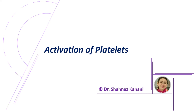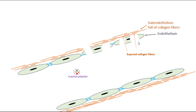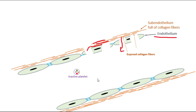It is important to know some methods by which platelets become active. For example, here we have a blood vessel whose wall is damaged. Part of the wall is endothelium, and in spots where endothelial cells are damaged, the collagen fibers in the subendothelium become exposed to the components of blood.